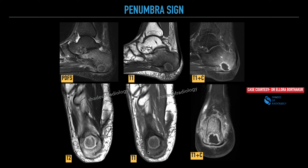You can see the similar lesion on T2 weighted sequence as well, and on post-contrast images you can see an enhancing thick rim within the lesion which is T1 hyperintense on the plain sequence, showing significant enhancement with adjacent marrow edema.